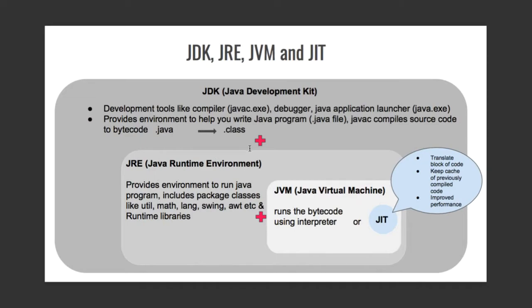JDK stands for Java Development Kit. It can be seen as a superset of JRE, plus development tools like compiler, debugger, and Java application launcher. It is the development kit which helps you write a Java program — a .java file. The debugger reports bugs in your program, and the compiler JavaC converts the source code into bytecode.